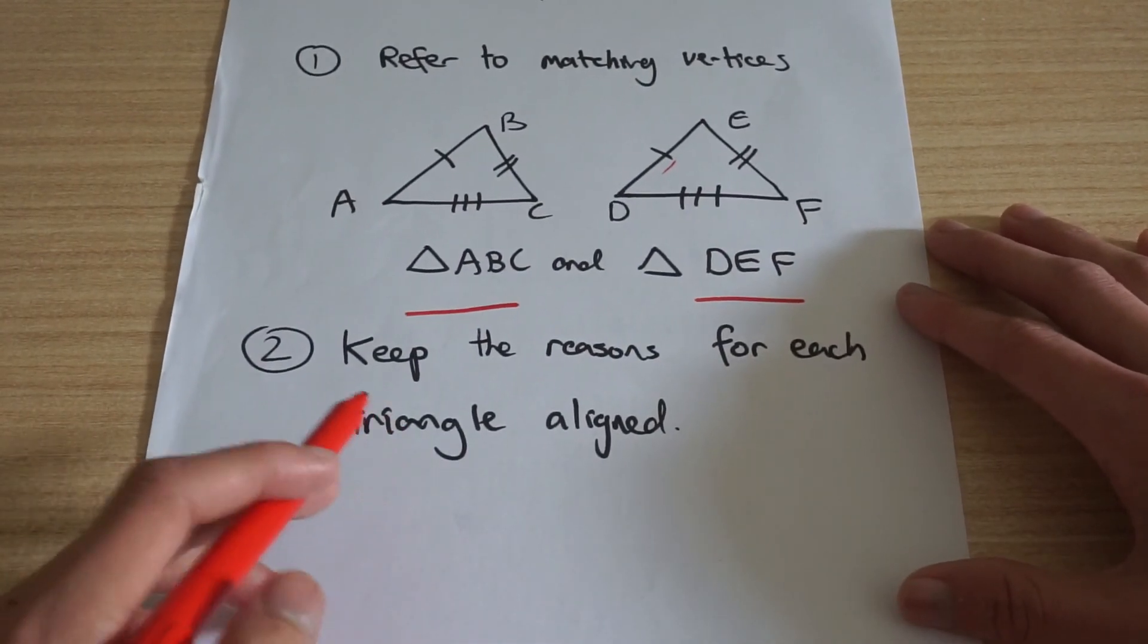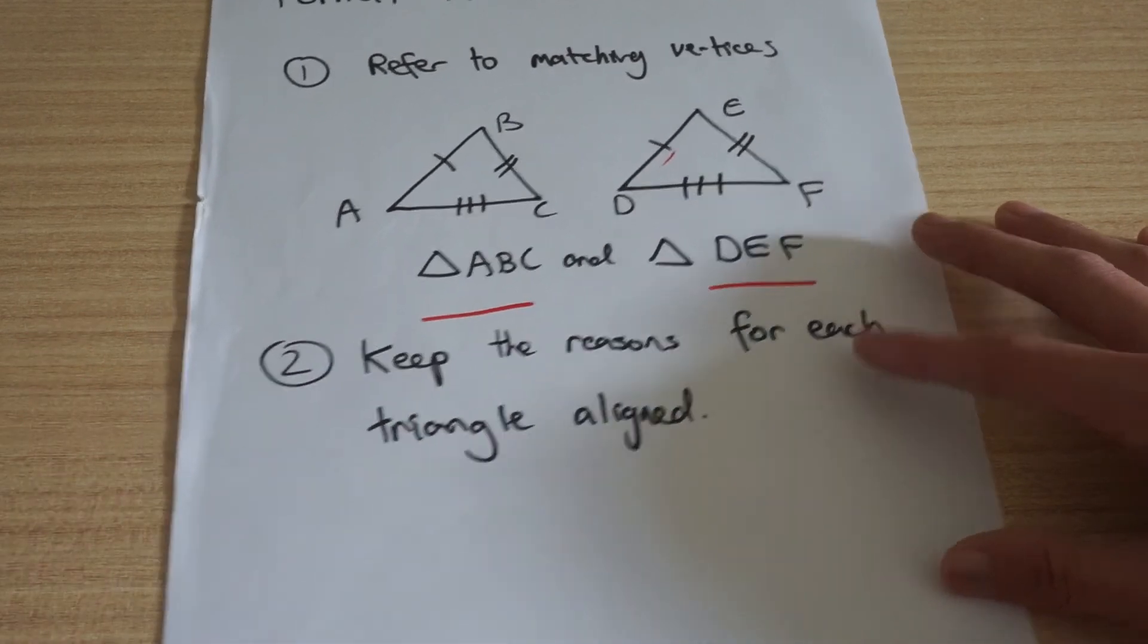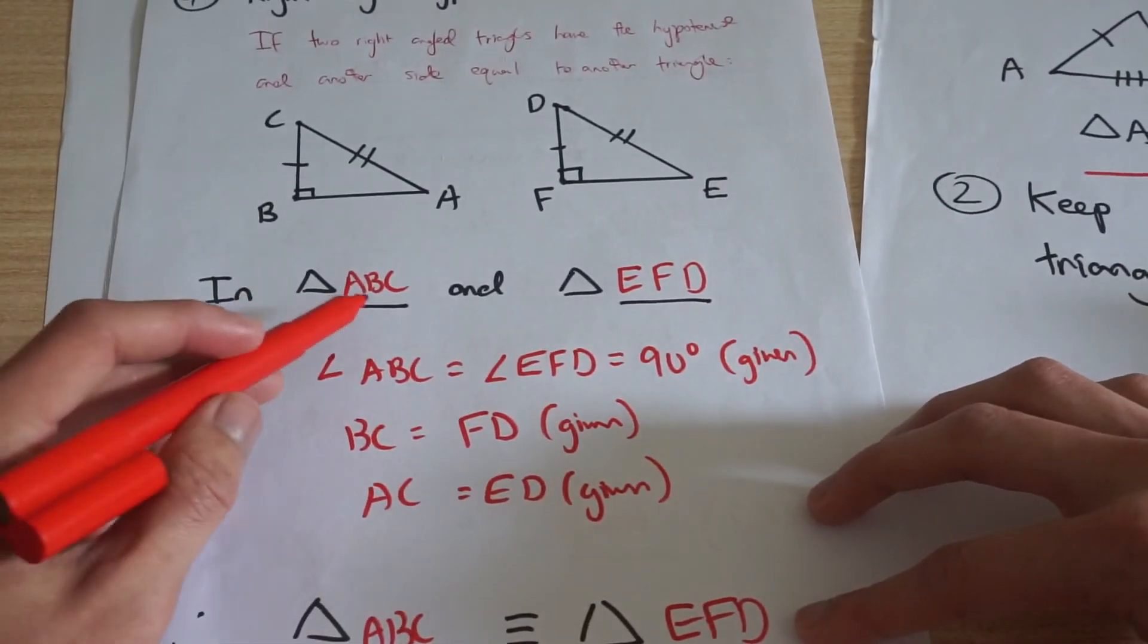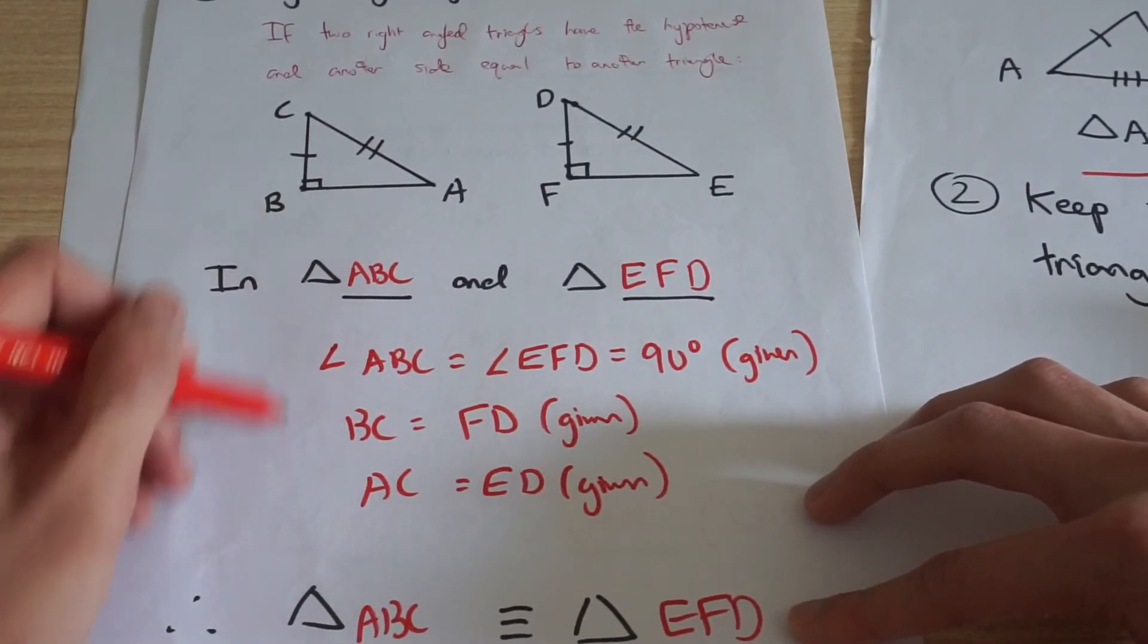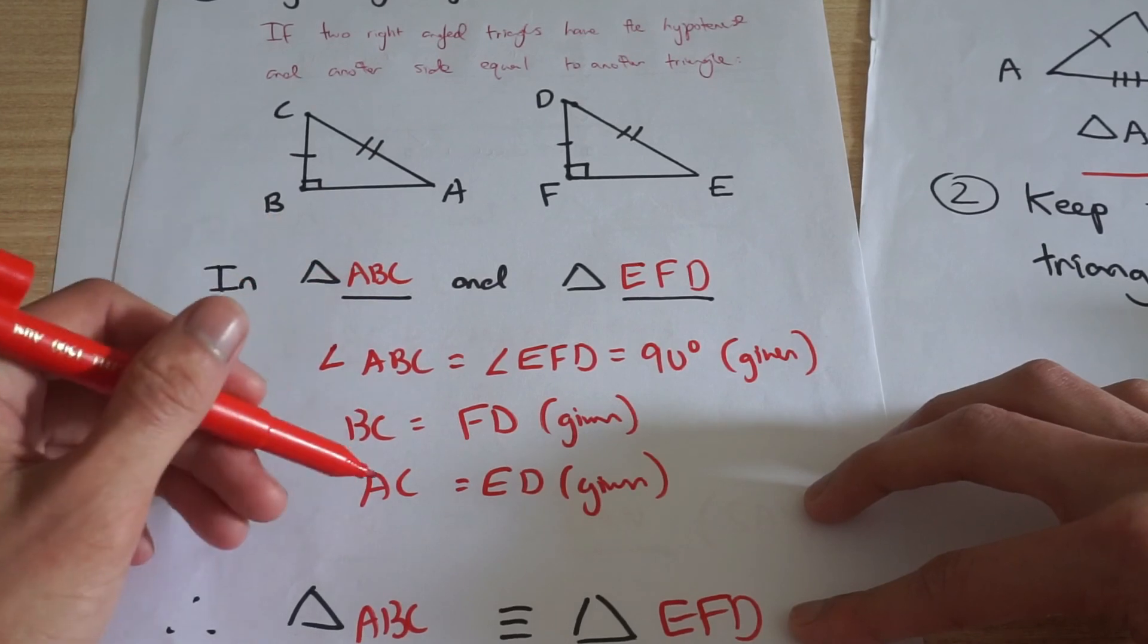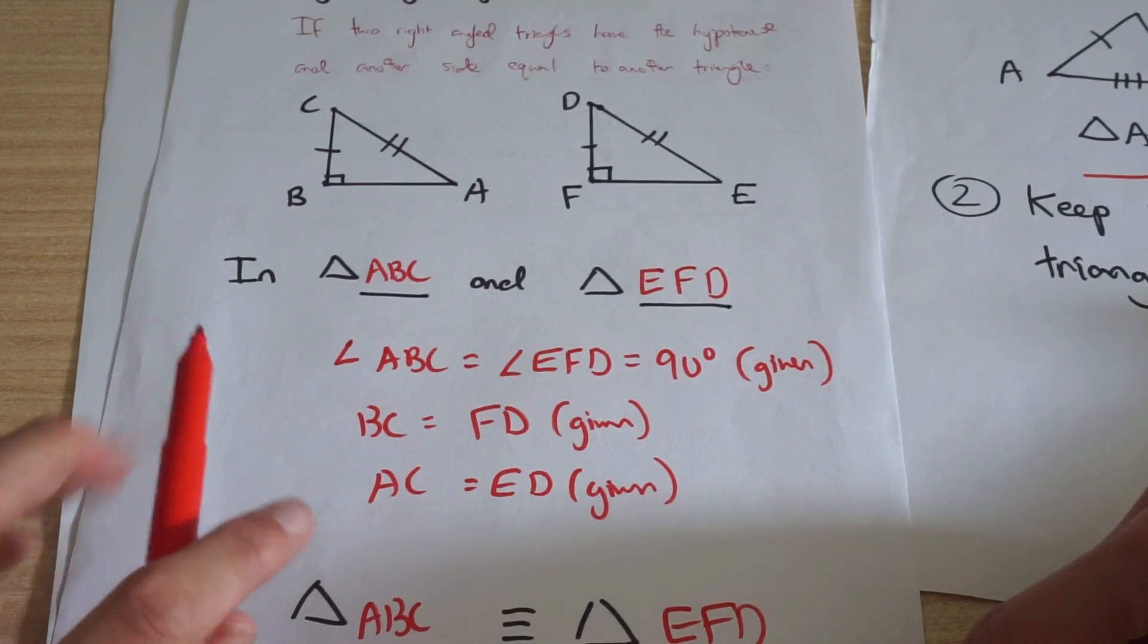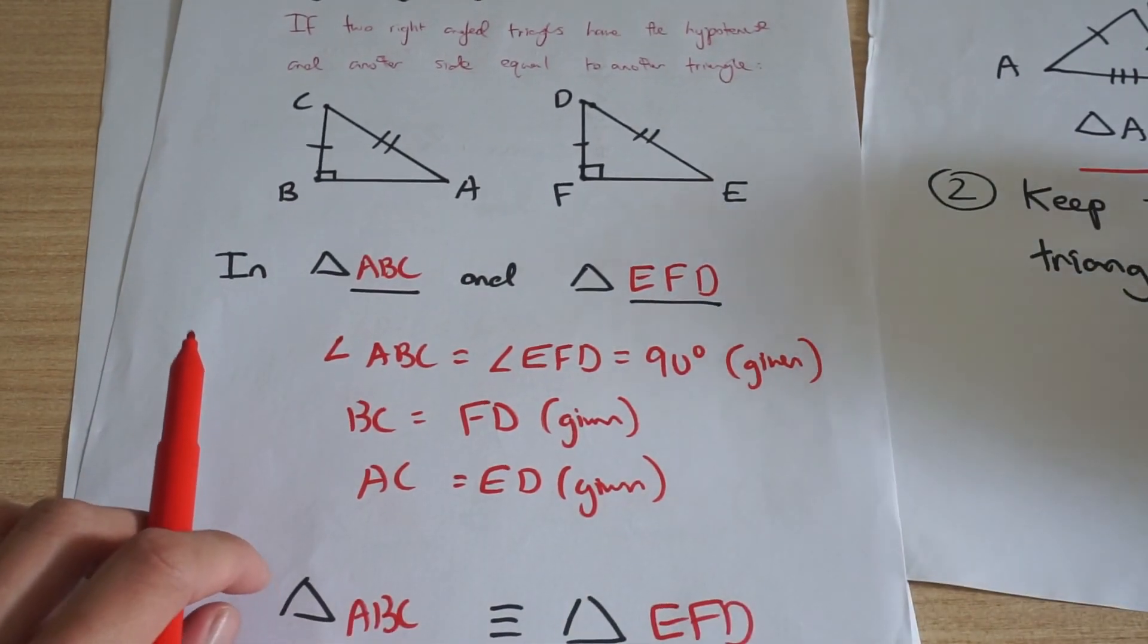And just something that's good practice as well, keep the reasons for each triangle aligned. So if I go back to this one here, when I talk about this triangle here, all my reasons are on this side, this left side. And when I talk about all the reasons for this triangle here, all the reasons are on this side. So just a couple of tips for congruent triangles.